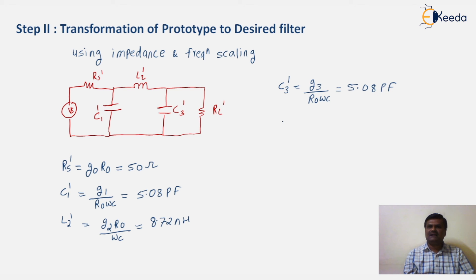Then RL dash. It is equal to G4 R0. So obviously it is 50 ohm. These are the design component values of the desired filter.